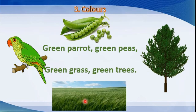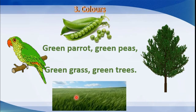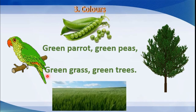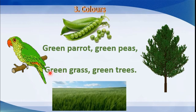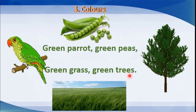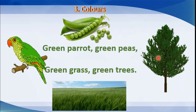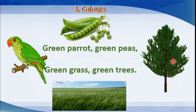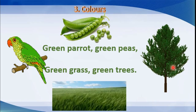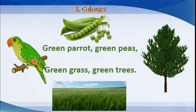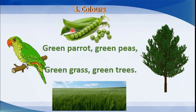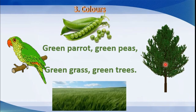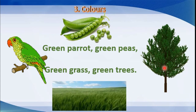Green grass - this is grass, and it is green in color. Green trees - this is a tree, and the leaves of the tree are green in color. So we say green tree. The parrot has green color, peas has green color, this grass has green color, and this tree also has green color.